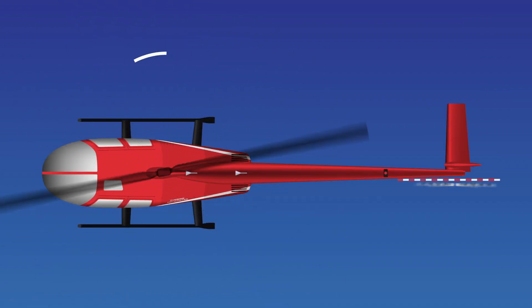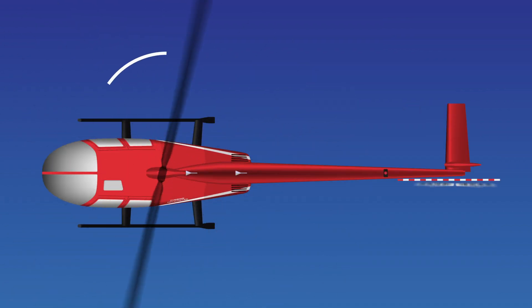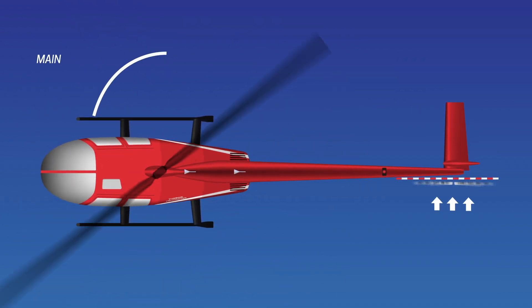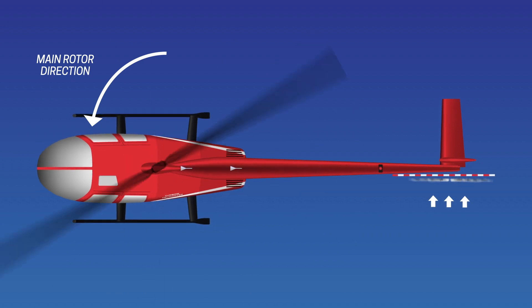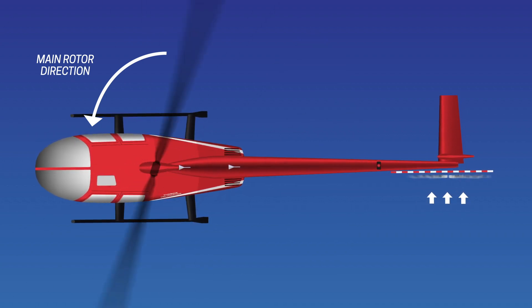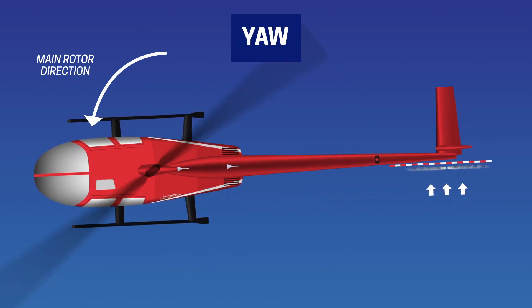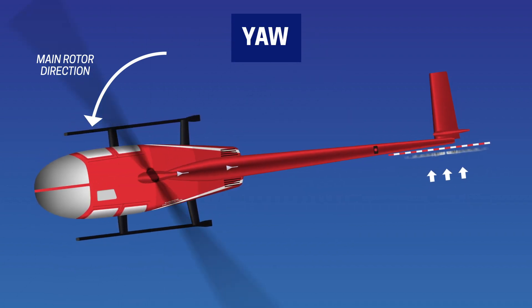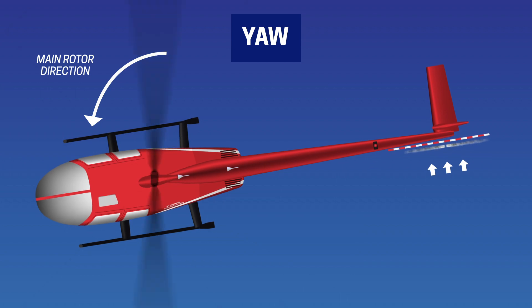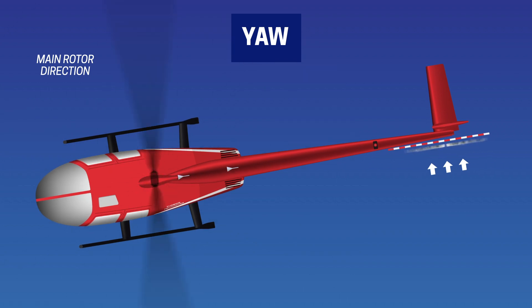The tail rotor can also be used to turn helicopters at very low or zero speeds. We call this yaw. The main and tail rotor of a helicopter spin at constant speed during flight and the controls adjust the pitch of the blades.